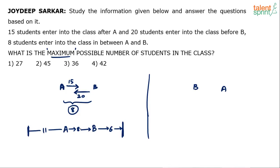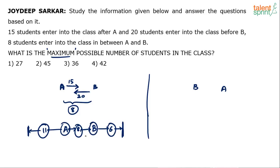The total strength of the class in this arrangement is: 11 people before A, then A, then 8 between A and B, then B, then 6 after B. That's 11 plus 8 plus 6 plus A plus B: 19 plus 6 equals 25, plus 2 equals 27.